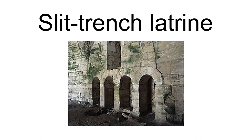A slit trench latrine consists of a relatively shallow trench which is narrow enough to stand with one leg on either side. This type is used either by squatting with the user's legs straddling the pit, or by various arrangements for sitting or leaning against a support structure, such as a log, plank, branch, or similar arrangement placed at right angles to the long axis of the pit.